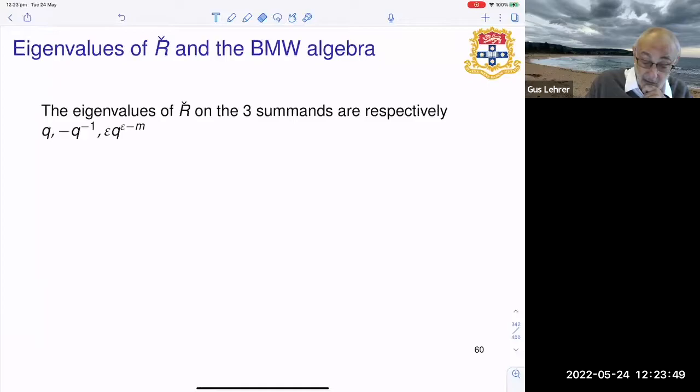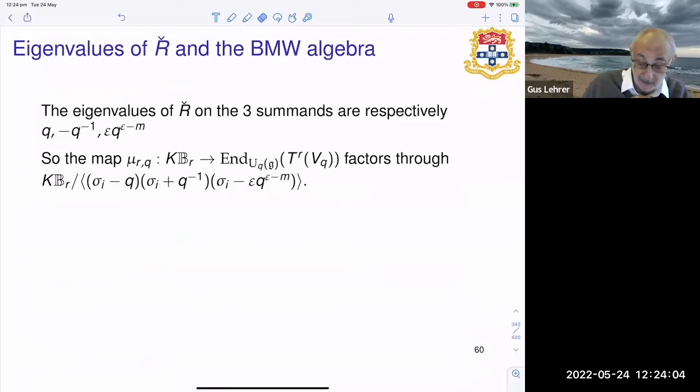The eigenvalues, there are three of them, are q, minus q inverse, and epsilon times q to the epsilon minus m, where epsilon is plus one in the orthogonal case and minus one in the symplectic case. And so the action of the group ring of the braid group factors through this algebra, actually a very interesting algebra. It is the group ring of the braid group modulo a cubic relation for the generators. Now in general the most general cubic relation is not sufficient to cut this algebra down to finite dimensions. So you need some extra relations.